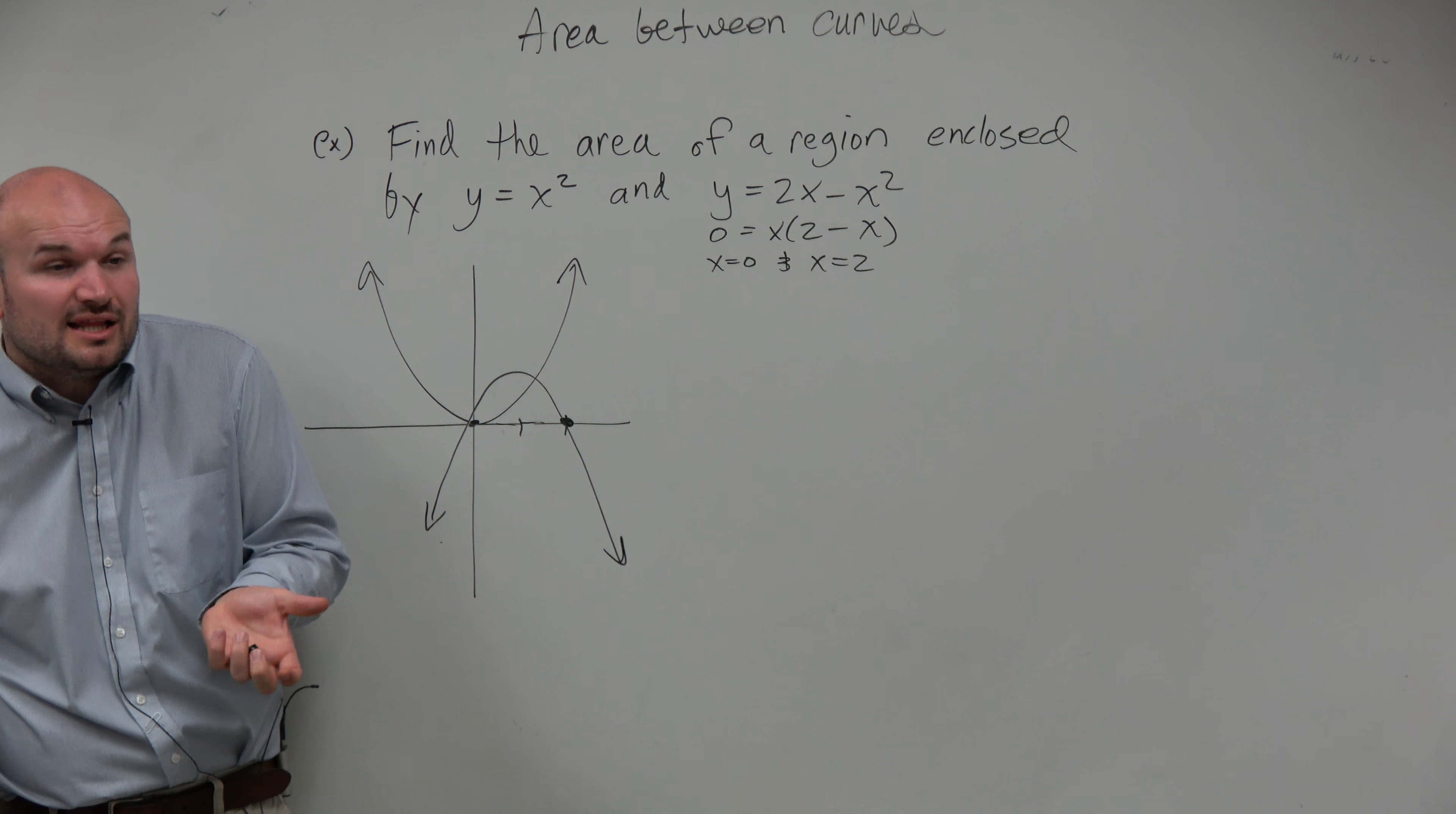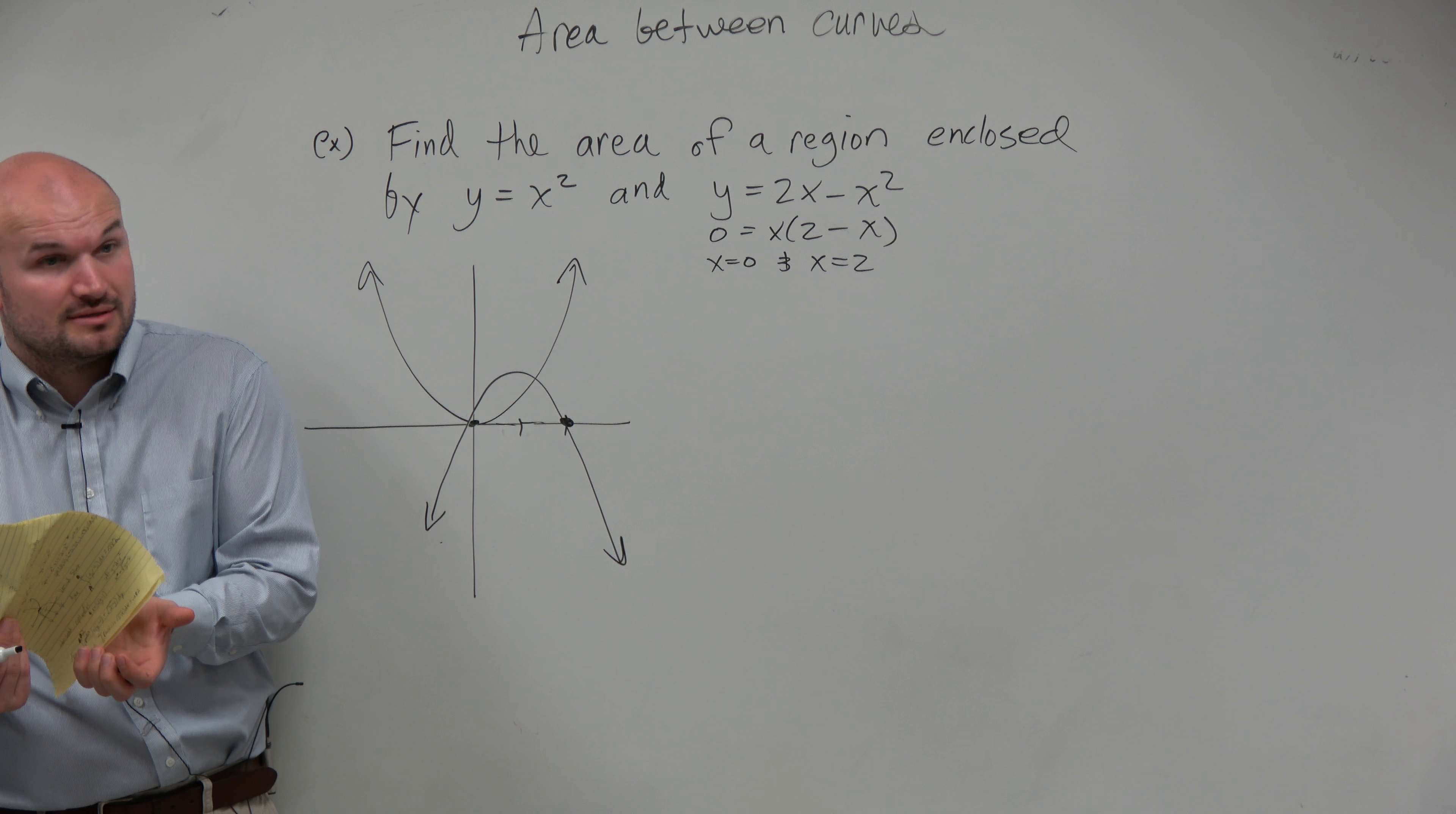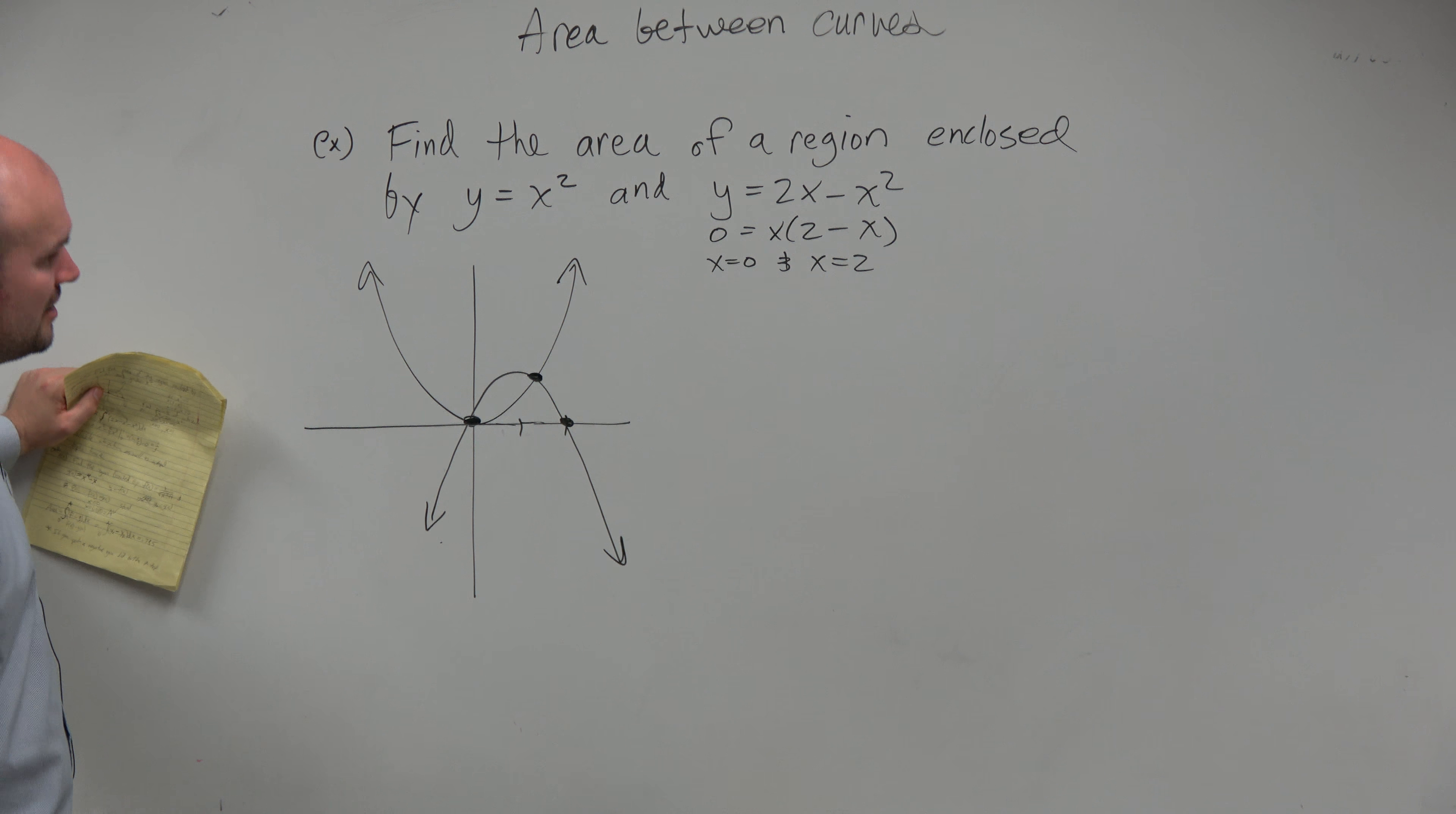Now in this example, they're not telling us where our region is bounded by, right? They're saying that they want to find the region enclosed. So what we're doing is we're looking for the intersection points, correct? So we have this intersection point, looks like it's at 0, 0. And this one, I don't know how well I sketched everything, but it looks like it could be maybe at 1, 1.